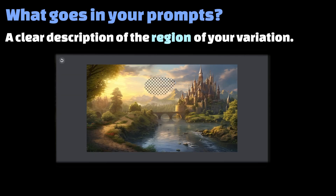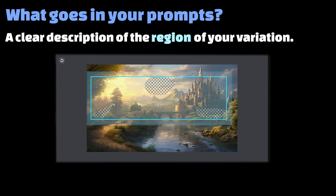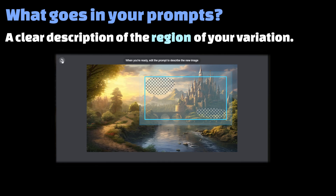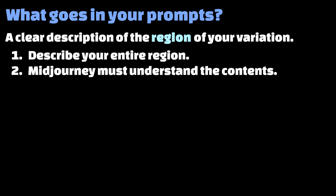Basically, depending on what you erase when you're in this mode, there is going to be a bounding box around what Midjourney has to generate. Very simply, your region is just a bit bigger than this box. So when you're writing a prompt for in-painting, the words you use must always describe your entire region. And to get a generation that meets your requirements, your region needs to make sense to the model.